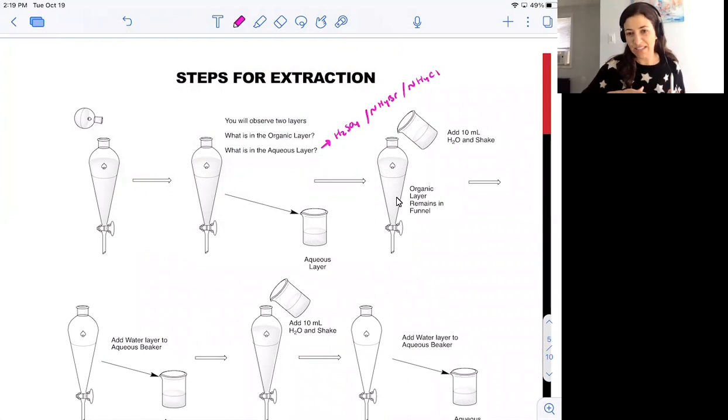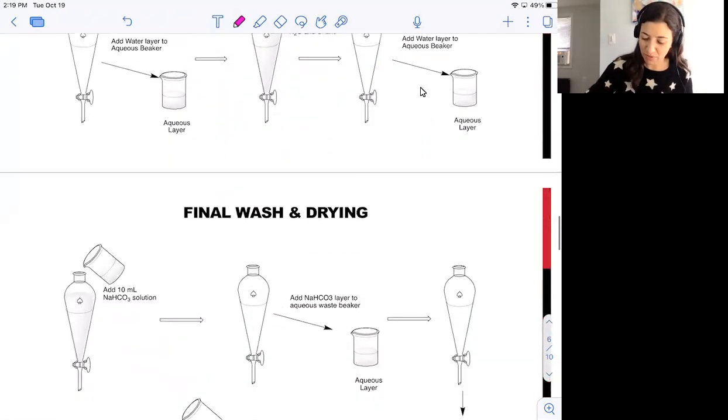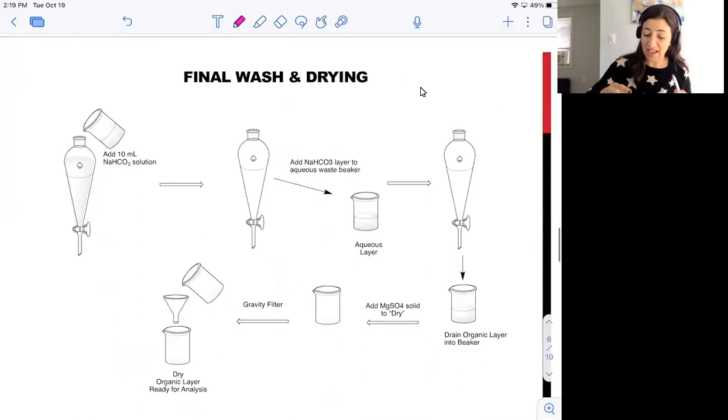The organic layer is then typically washed a couple of times. The washing refers to the addition of some extra water, shaking of the separatory funnel, and allowing the two layers to settle again, and collecting the aqueous layer and adding it to our initial water collection. This allows us to remove trace amounts of acid or salts that are lingering behind in the organic layer. It's really important to do this to be able to get a nice clean gas chromatogram.